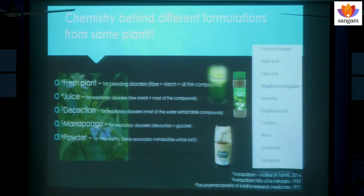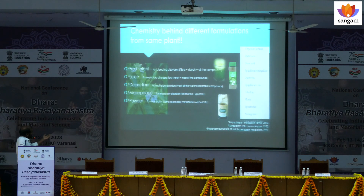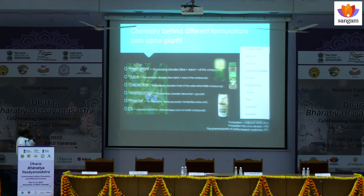The last preparations are powder and oil. You can clearly see that the fresh plant has one indication, juice is for a different disorder, decoction for another, and powder for yet another. Oil from this same plant is used for uterine prolapse or bilateral tubal block. So just by using the same compounds with different formulations, you are treating different diseases.